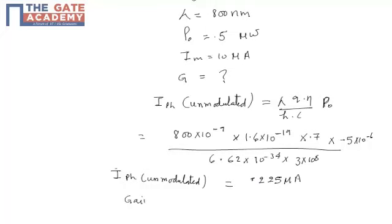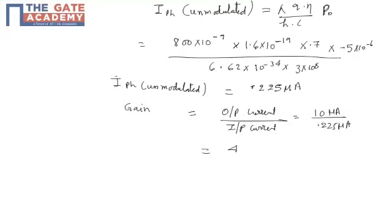Now, gain is nothing but output current, that is modulated, by input current, that is unmodulated. So, output current is 10 microamperes, input current is 0.225 microamperes. So, this is equivalent to 44.